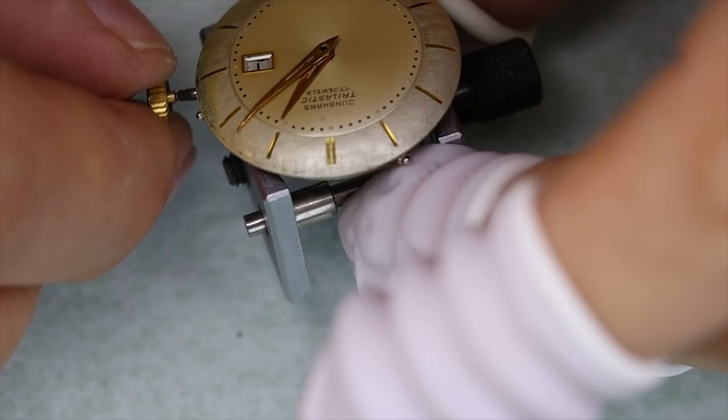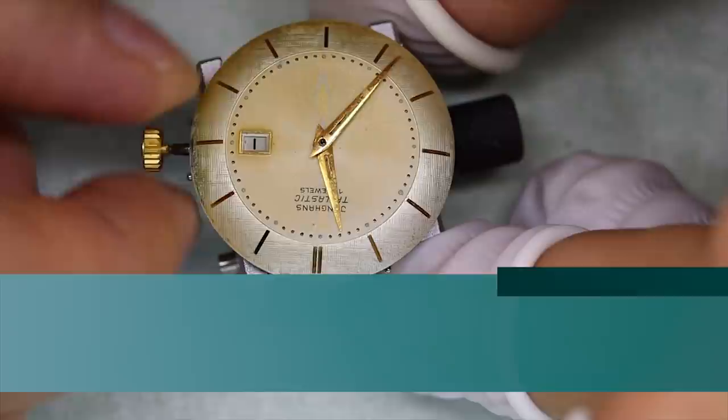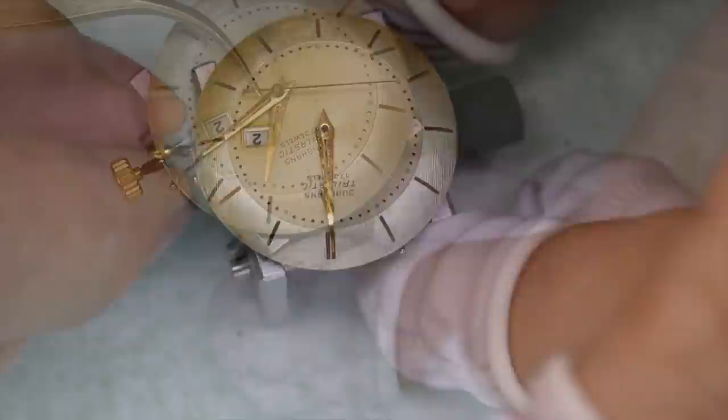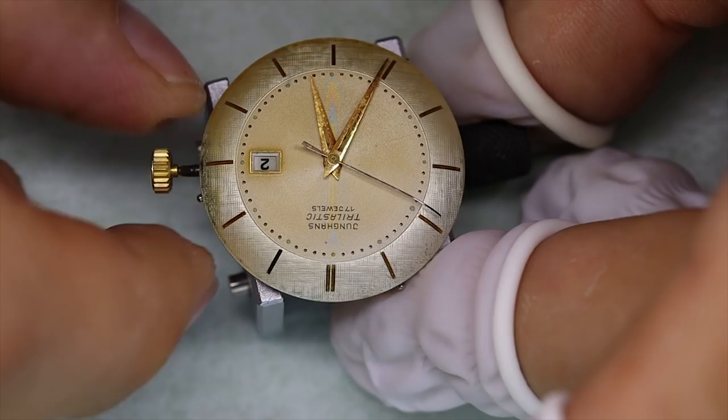For every hand we put on, we check that it is parallel to the dial, so it doesn't touch any of the other hands or anything on the dial. Let's see, the hour hand jumps a little bit just around midnight, and that's just a characteristic of the movement. It is that big fat date jumper that jumps the date wheel a little bit forward, and with it the hour hand.